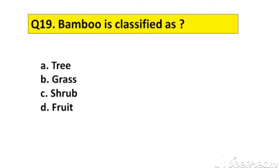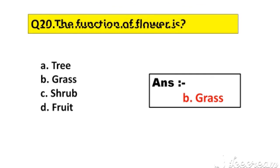Question number 19. Bamboo is classified as: A. Tree, B. Grass, C. Shrub, D. Fruit. The right answer is option B, Grass.